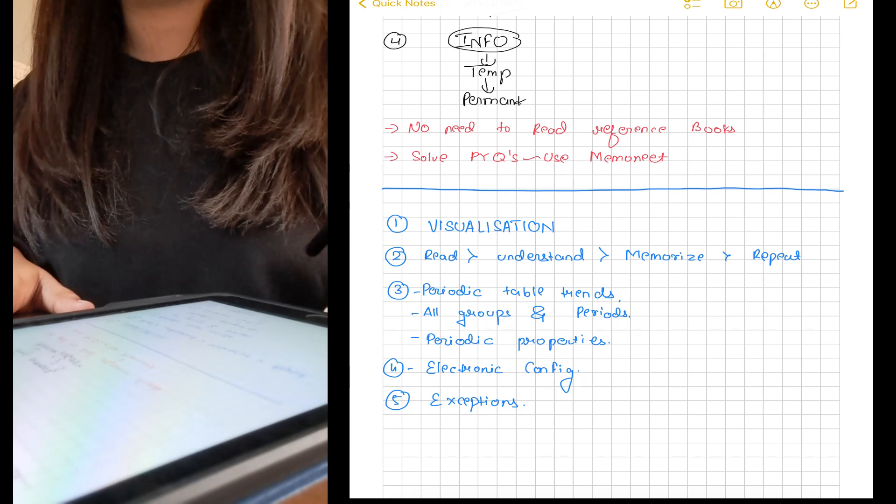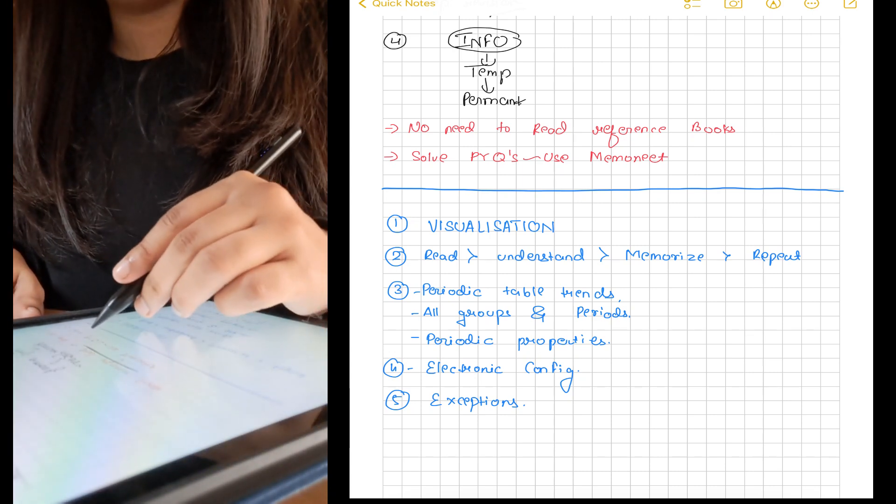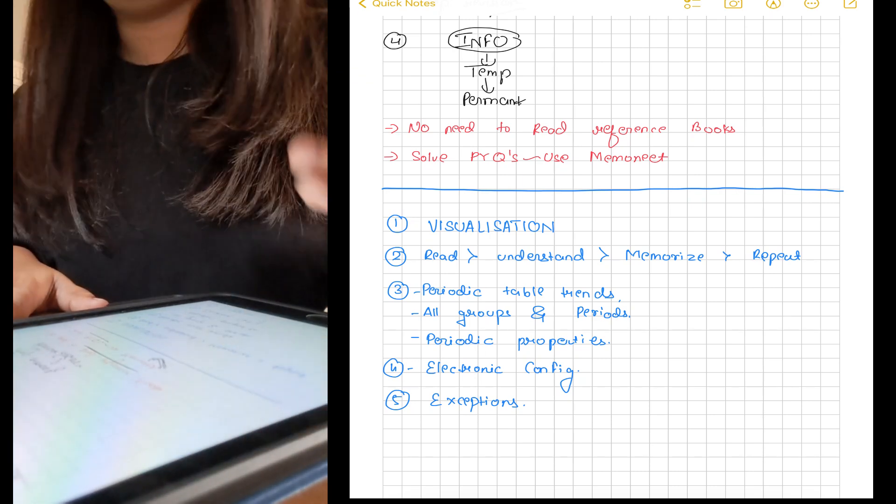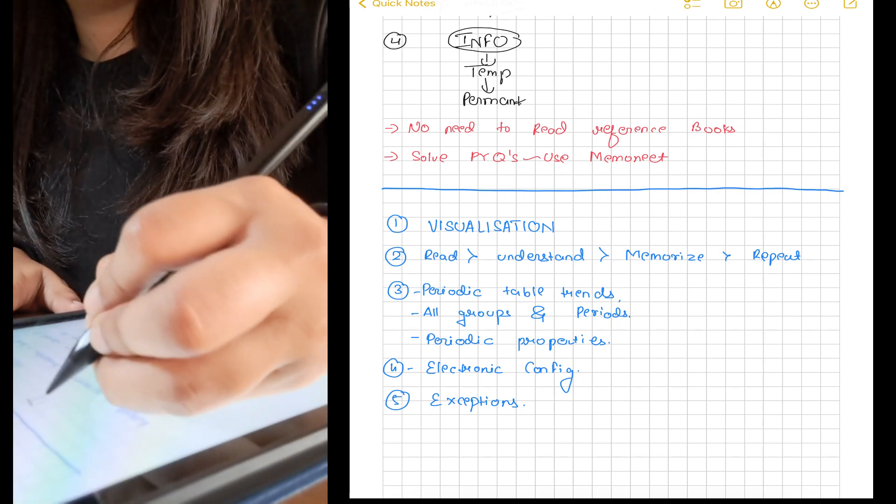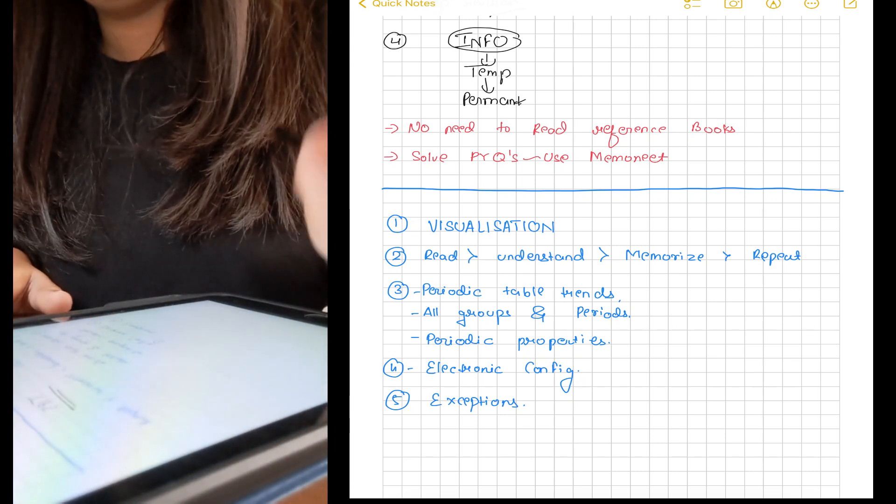Do the chapter on periodic properties with dedication because this chapter is literally in all concepts. Do electronic configuration with more focus. You should know which element is present in which group and period by looking at its configuration. Lastly, don't forget to learn the exceptions.